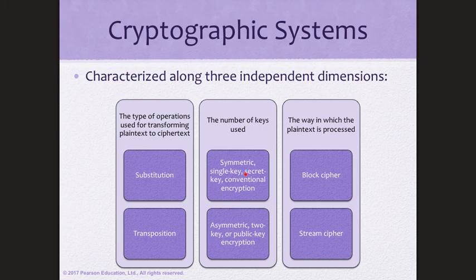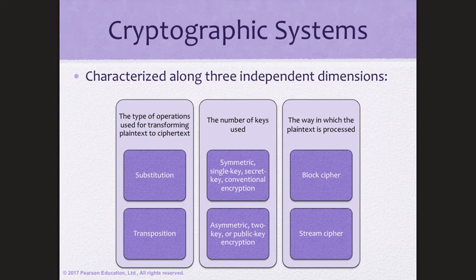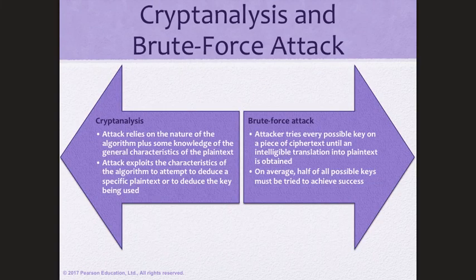There are also other ways of categorizing cryptographic systems. If one key is shared between transmitter and receiver, that's a symmetric cipher. If two keys are used — one public and one private — that's an asymmetric cipher. There is also block cipher, where data is handled one block at a time, and stream cipher, where you encrypt a continuous stream of bits as they flow.